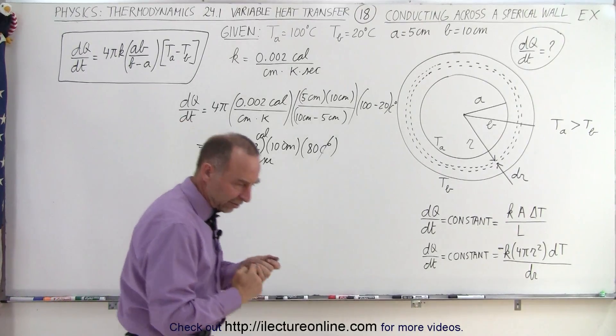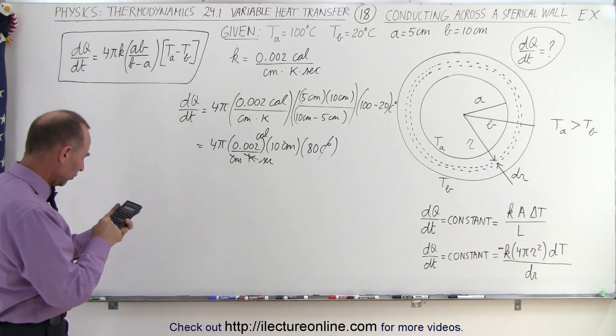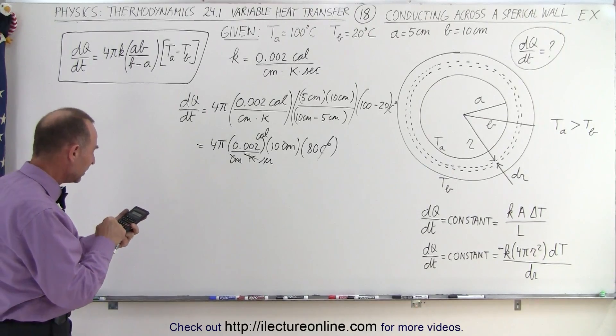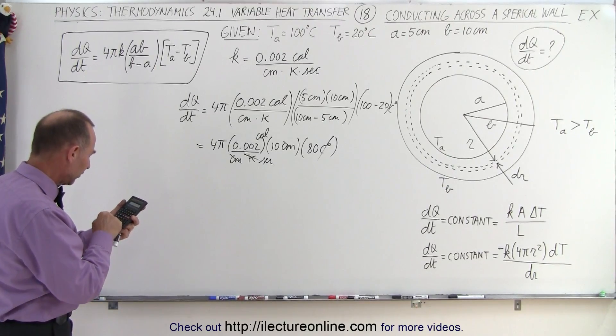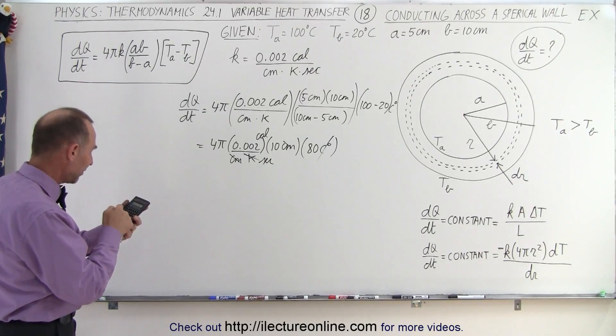So let's work this out, see what we get. Using a calculator. So 4 times π times 0.002 times 10 times 80.